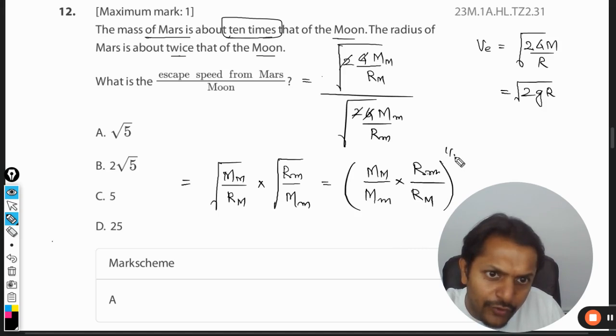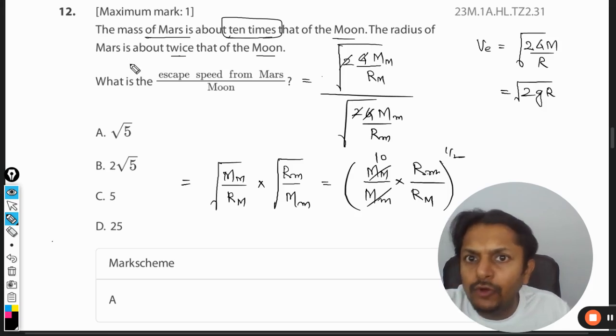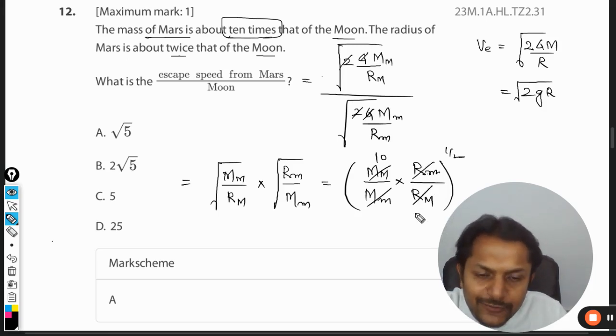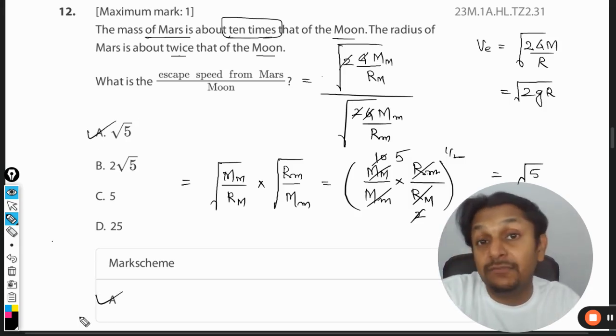This can be taken as 10, and the radius of Mars is about twice that of the Moon, so this will become 2. So this is coming out to be 5. Our answer will be literally square root of 5. That's it, and that is what is the mark scheme.